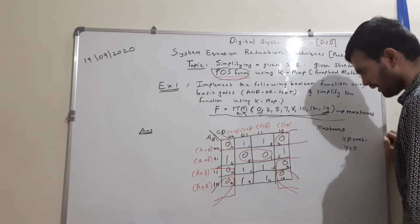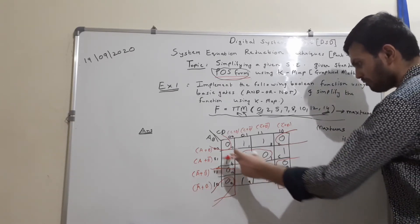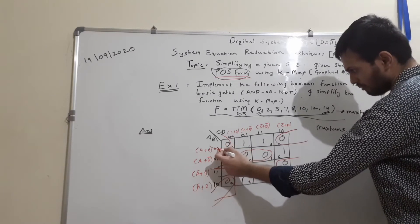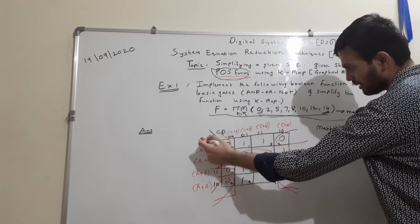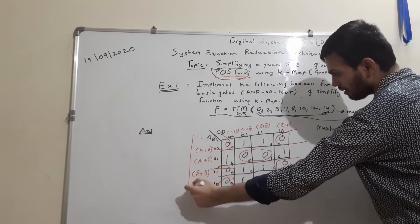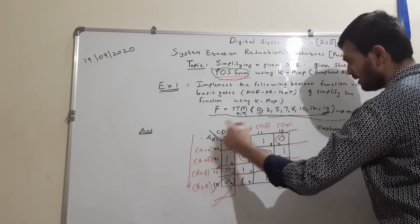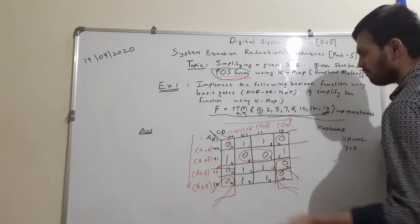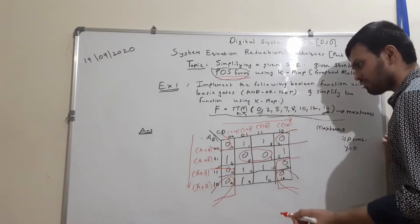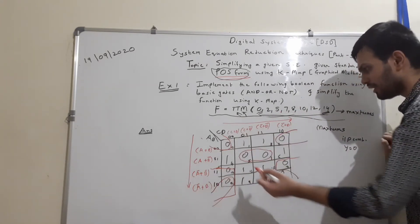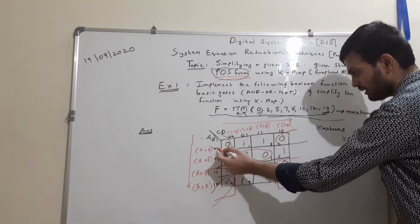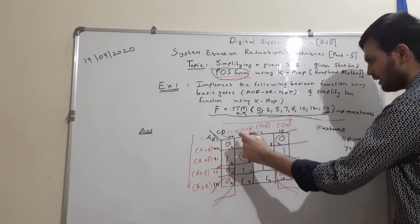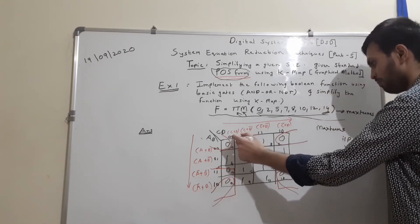Now let us analyze the KMAP labeling. The sequence uses Gray code — the vertical side represents AB and the horizontal side represents CD. The Gray code sequence is: 00, 01, 11, 10 — the same on both axes.